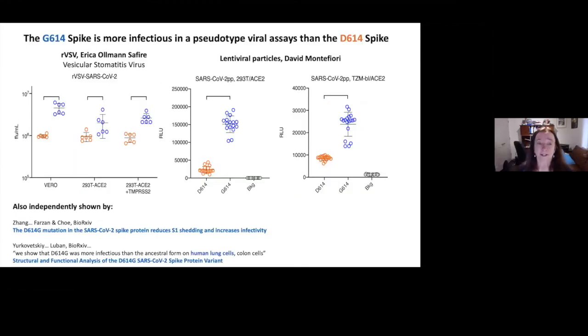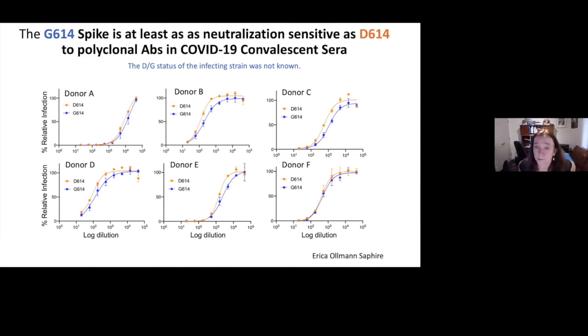Basically the other thing we published in our cell paper was spike is more infectious in pseudotype assays if it has the G614 mutation. And this was found in Erica Ollmann Saphire's lab and in David Montefiore's lab and others have reported this in the archives as well. So all of the qualifications that Jesse just gave us about pseudotypes also apply here, but they were able to see this with a different platform background. So VSV versus lentiviruses and different cell types. And they always found that these G mutations were more infectious.